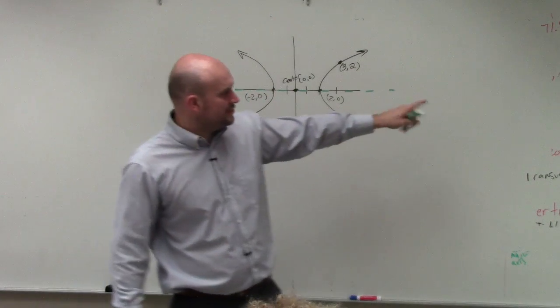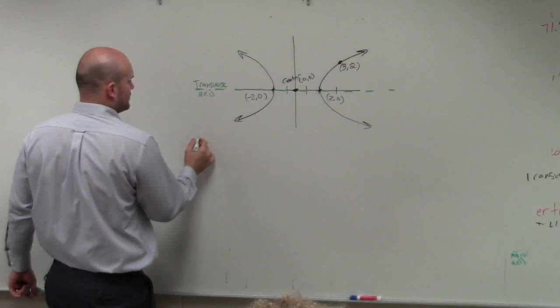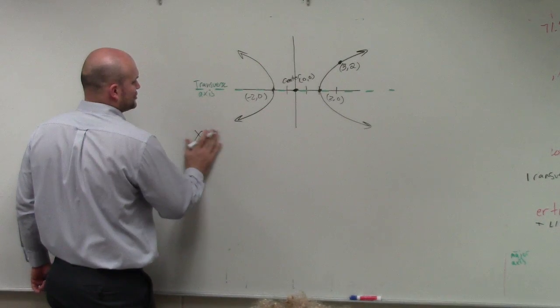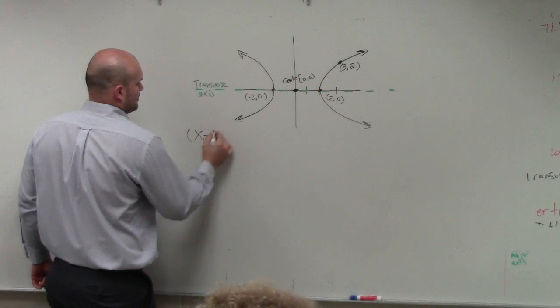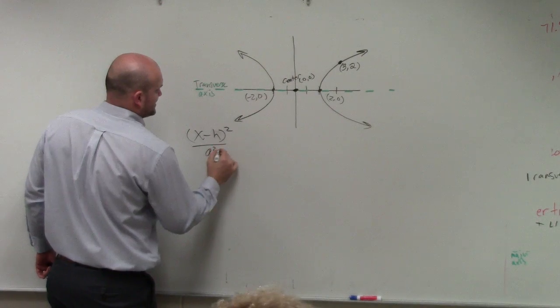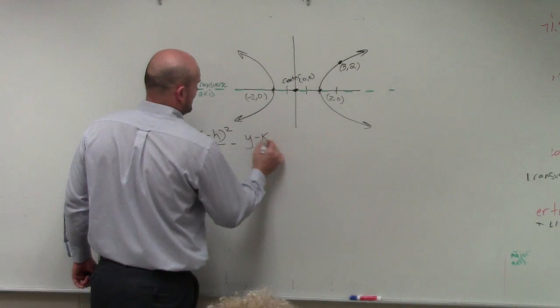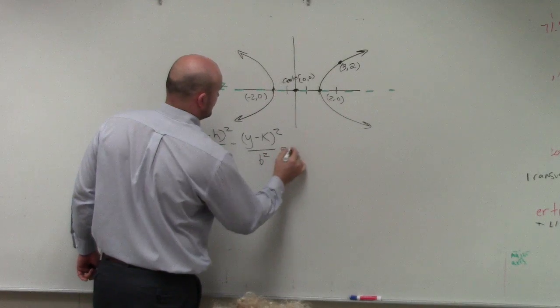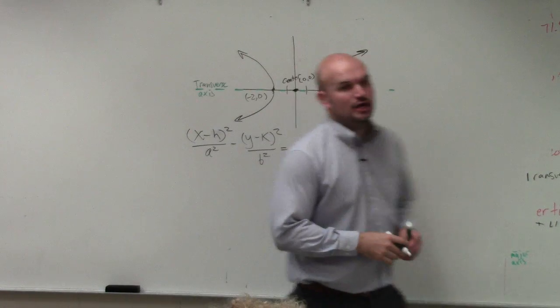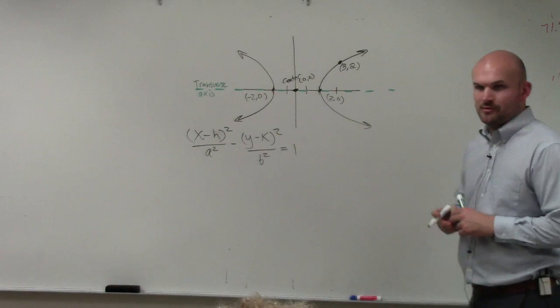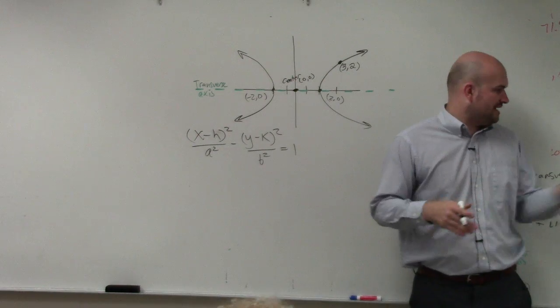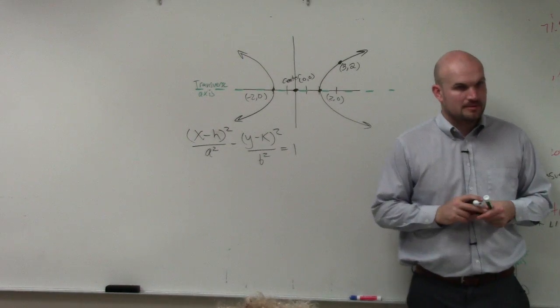And the equation that we're going to use for a horizontal is going to be x minus h squared over a squared minus y minus k squared over b squared equals 1. Does everybody agree with me why I'm using that formula? Or at least does everybody understand why I'm using that formula instead of that formula?